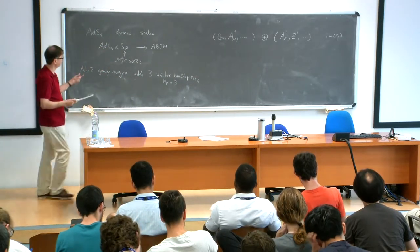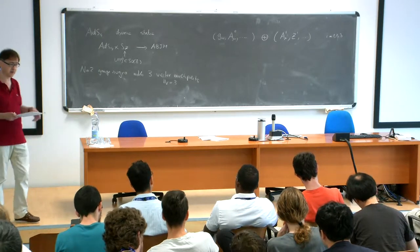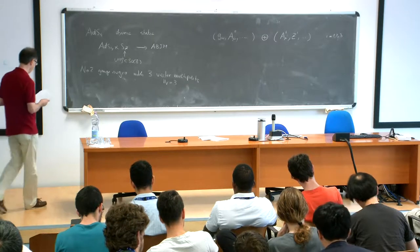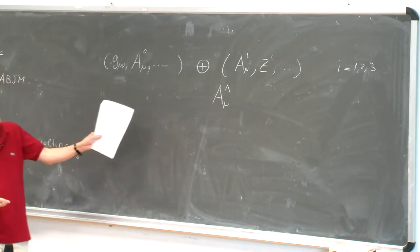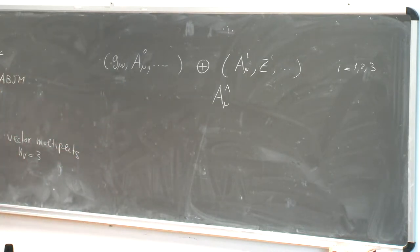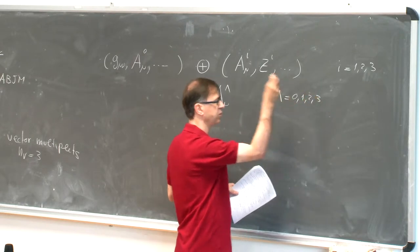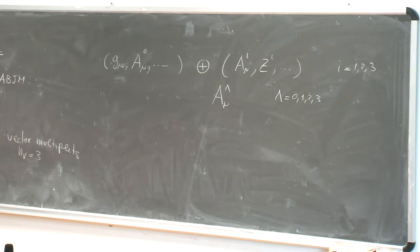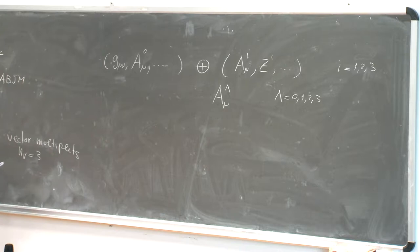Combining the three gauge fields with the gravity photon, you fill the fourth vector needed in the dimensional reduction. The gravity photon is, in some sense, associated with the R-symmetry of the dual conformal field theory. In writing the gauge supergravity it's convenient to combine the vectors into an index λ going from 0 to 3. Zero corresponds to the gravity photon, and one, two, three correspond to the vector fields in the vector multiplets. These four give the Cartan of U(1)^4.